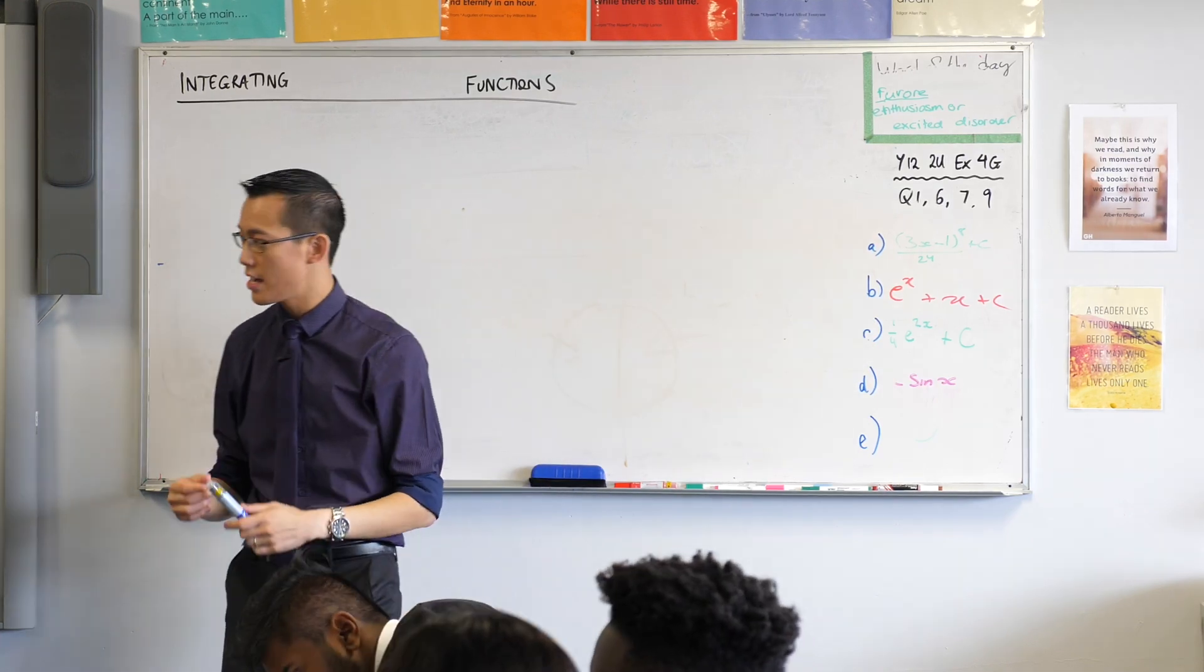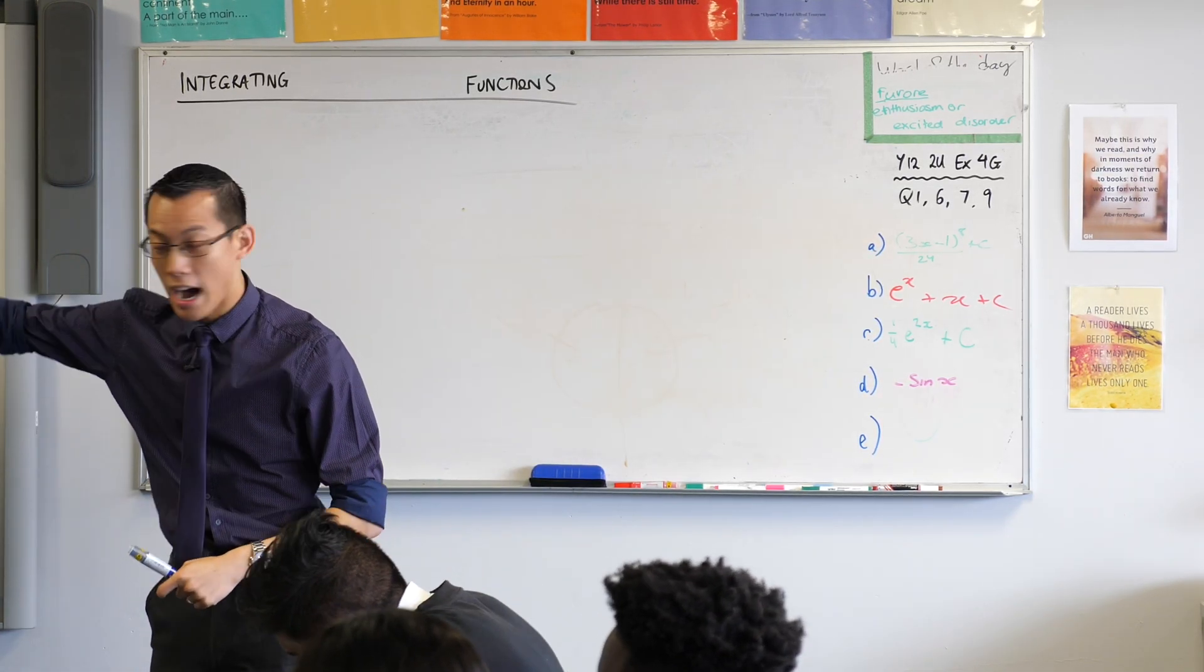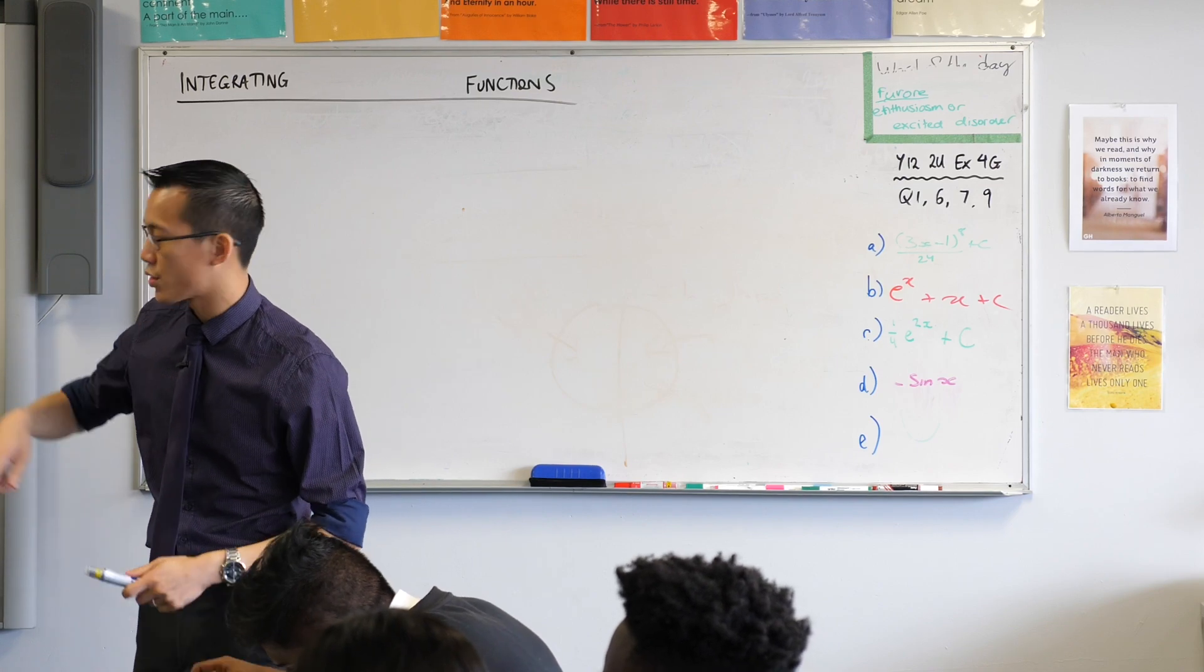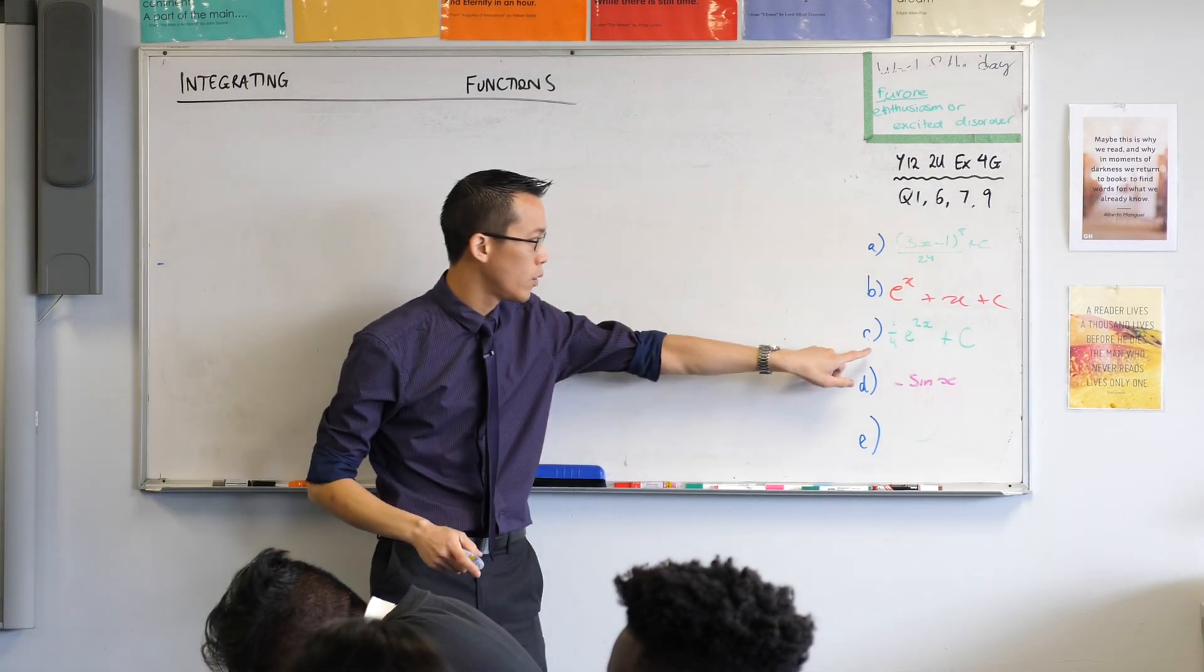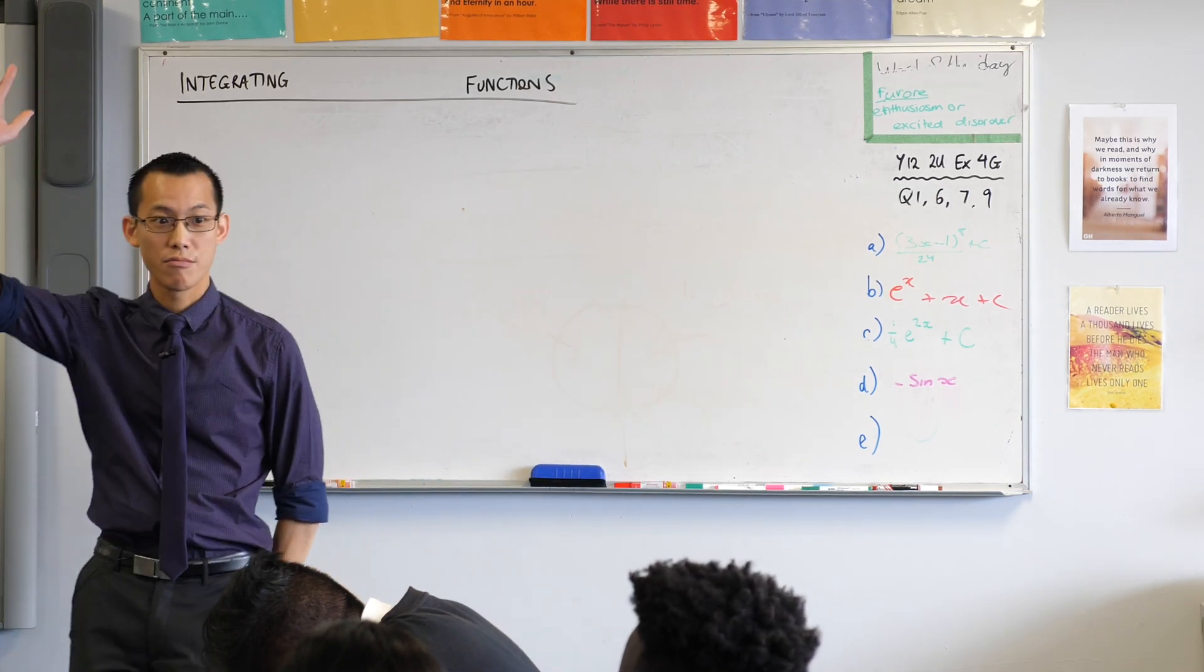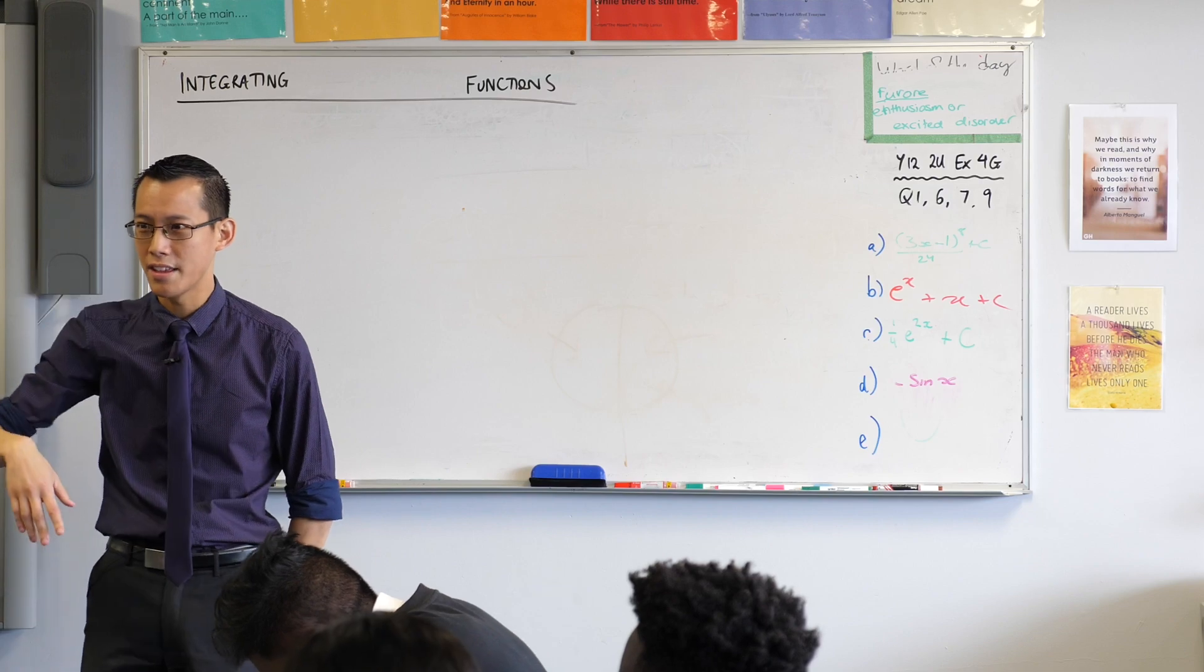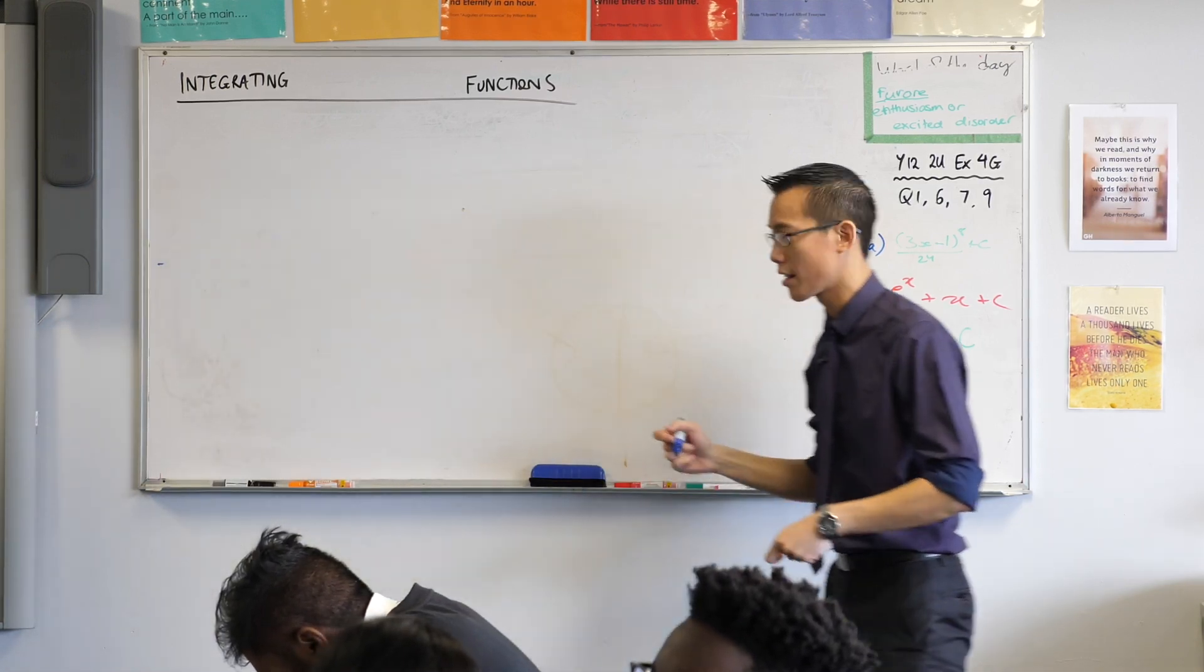Alright, now part c is a bit sneakier, because you've got to decide what to do with that half out the front, and then your index of 2x. So we've got here a quarter e to the 2x plus c. Agreement? A few, but not heaps. Okay, hands down, a few, but yeah, less than a third of the class.